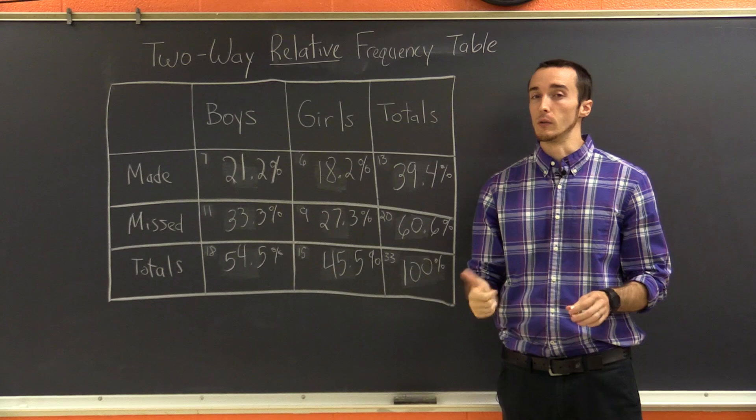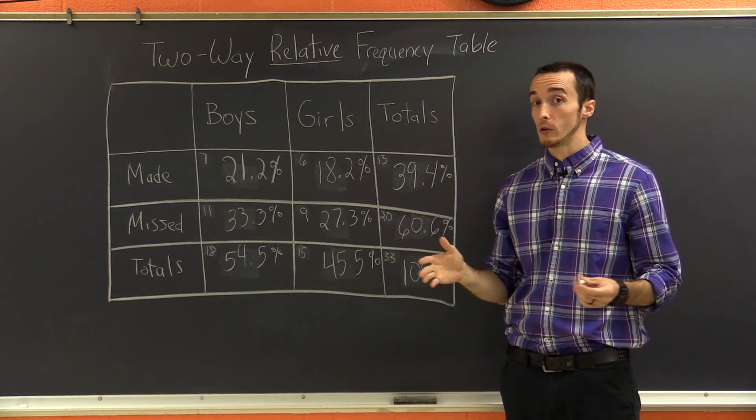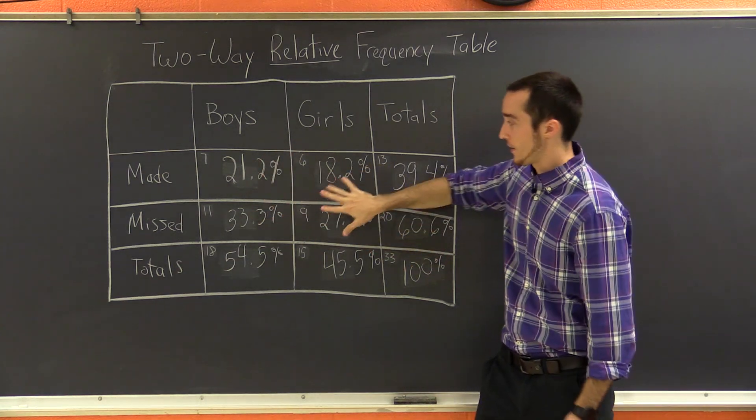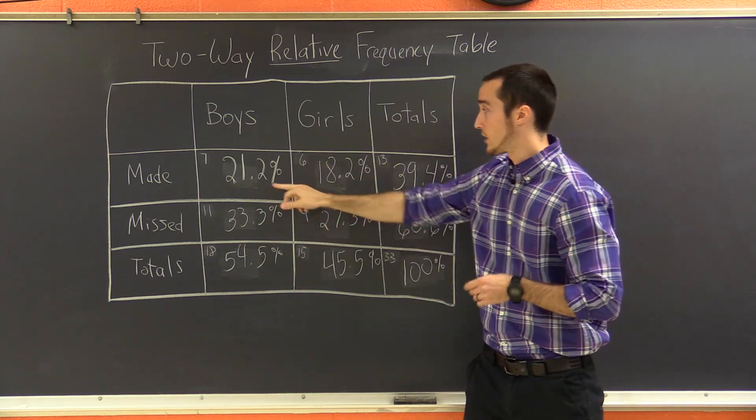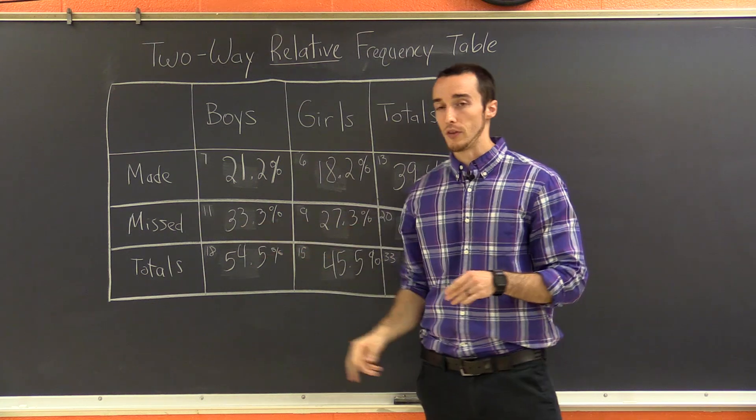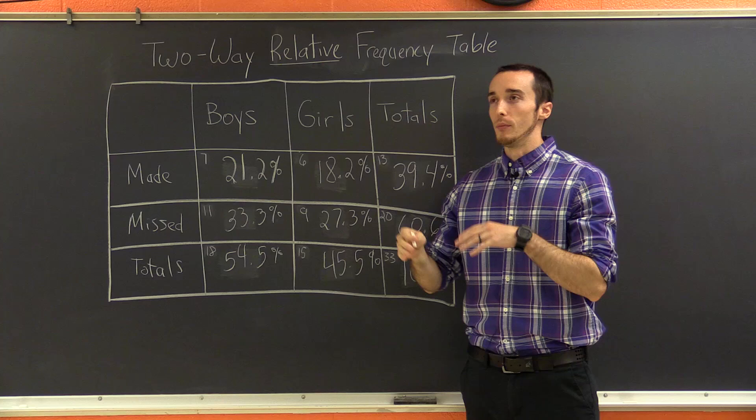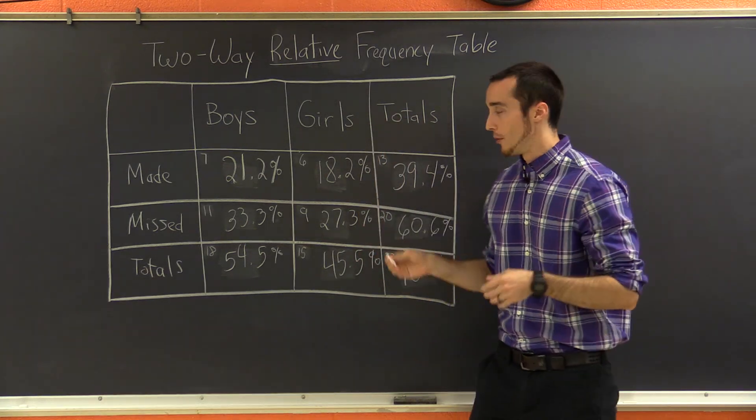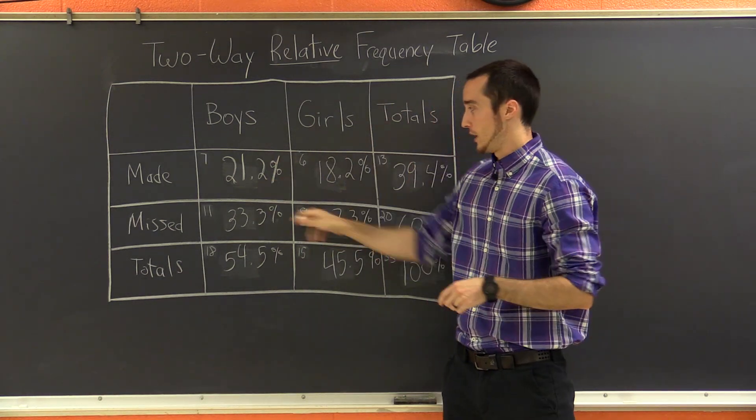The first one is joint relative frequency. What does that mean? I always think of joint relative frequency as one of the inside percentages. In other words, it's one of the percentages on the inside of the table, not these ones on the outside. But in our example, it's going to be one of these four numbers, 21.2, 18.2, 27.3, and 33.3. So a joint relative frequency, this is a dumb way to remember it, but if you are in jail, they say you're in the joint, and so that's the dumb way that I remember it, is that you're trapped in jail or in the joint if you're one of these frequencies.